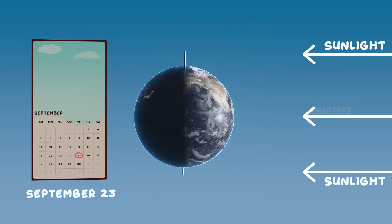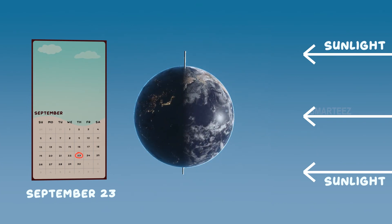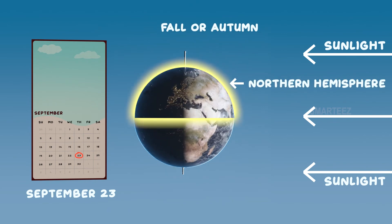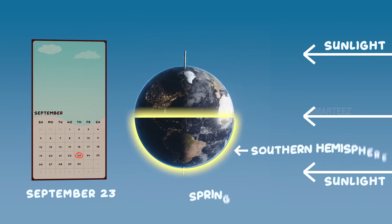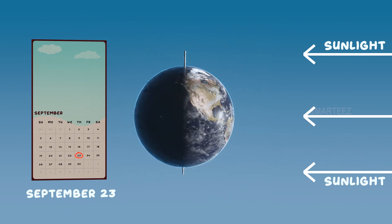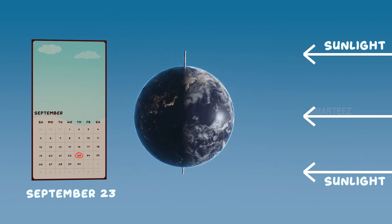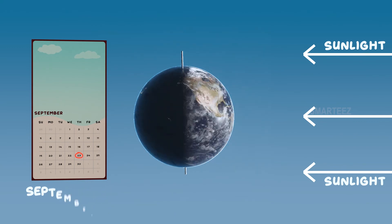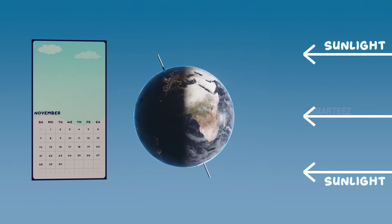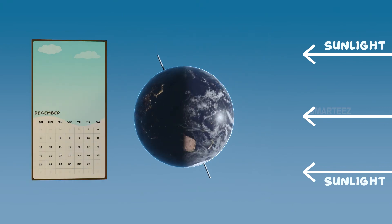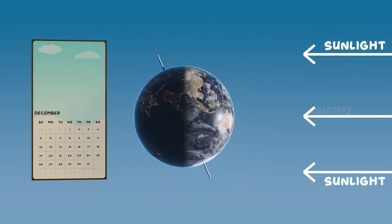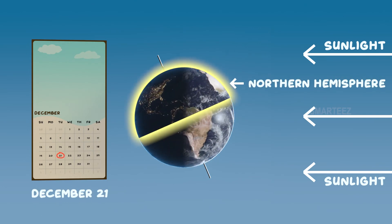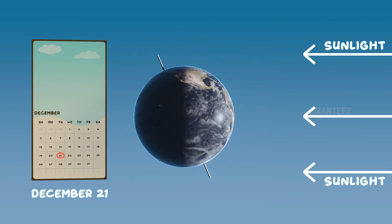We experience equal day and night in both hemispheres. This is also the beginning of fall or autumn in the northern hemisphere, while it's the beginning of spring in the southern hemisphere. Wow! We are now seeing the pattern here, Mr. Hopster! Great job, duckies! Now the earth continues to revolve around the sun and it becomes winter again starting December 21st for the northern hemisphere.